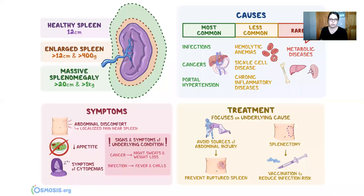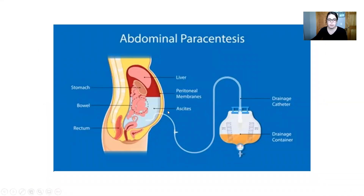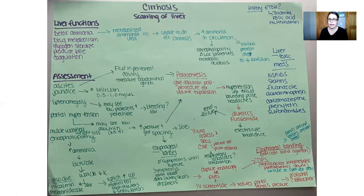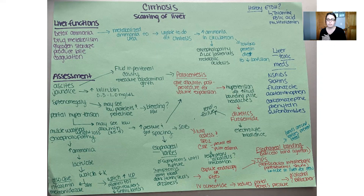We stick a needle into the peritoneal cavity — very similar to a peritoneal dialysis catheter, pretty much the same location — and we drain it. This is a one-time procedure. We perform the paracentesis, drain the fluid from the abdominal cavity, then monitor the insertion site for signs of infection and assess vitals. If removing a really large volume — similar to thoracentesis — we may remove one to two liters at most, though sometimes a much larger volume is needed for symptom relief.